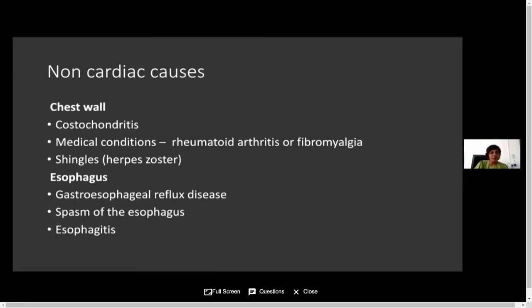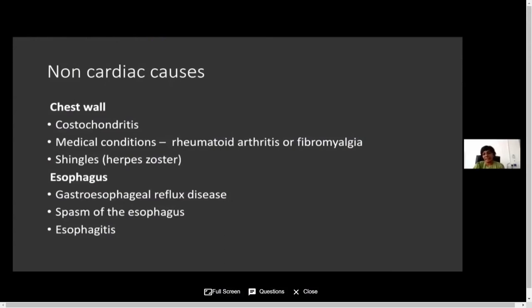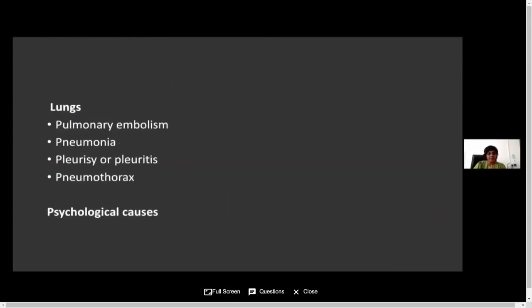Non-cardiac causes can arise from the chest wall — costochondritis is one of the most common, and elderly females often present with it, alongside conditions like rheumatoid arthritis and fibromyalgia. It can also come from the esophagus: gastroesophageal reflux disease, esophagitis, or esophageal spasm. From the lungs: pulmonary embolism, pneumonia, pleuritis, or pneumothorax.